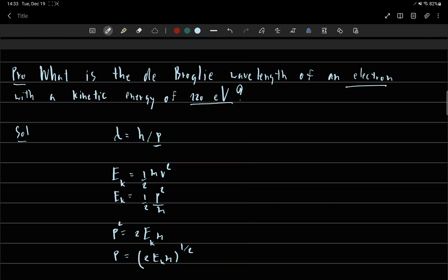So we know the kinetic energy of the electron, so we have to find the momentum of the electron. We have to use kinetic energy equals one over two mv squared.